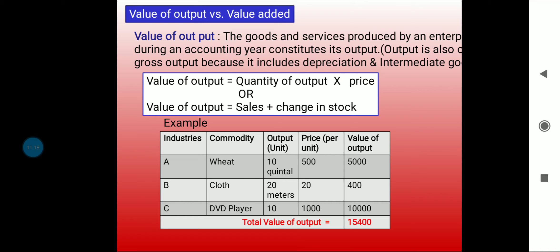Now distinguishing between value of output and value added. Value of output means sales plus change in stock. The goods and services produced by an enterprise during an accounting year constitute its output.